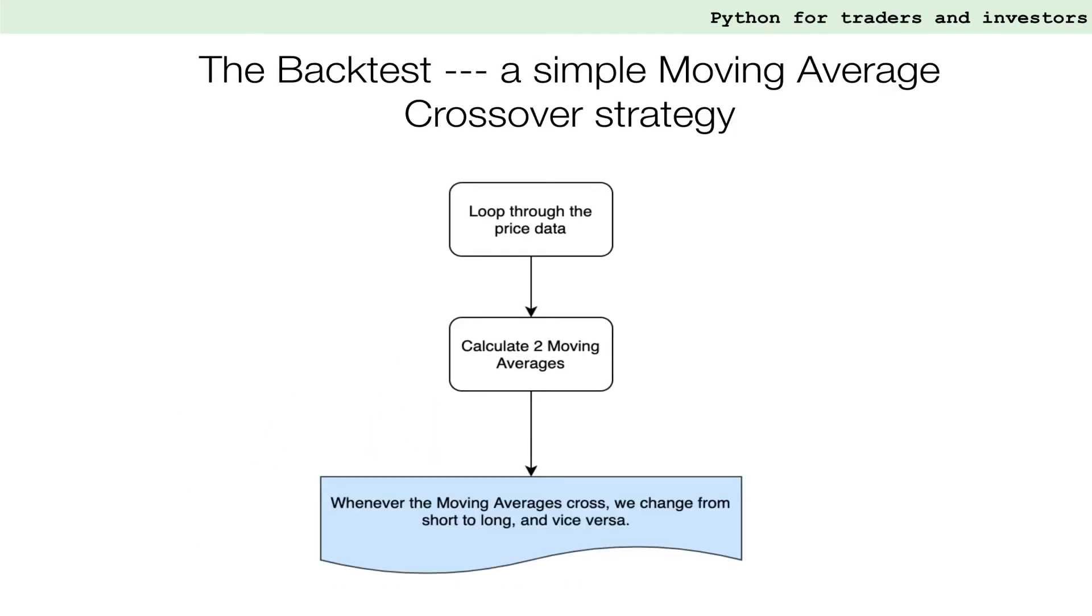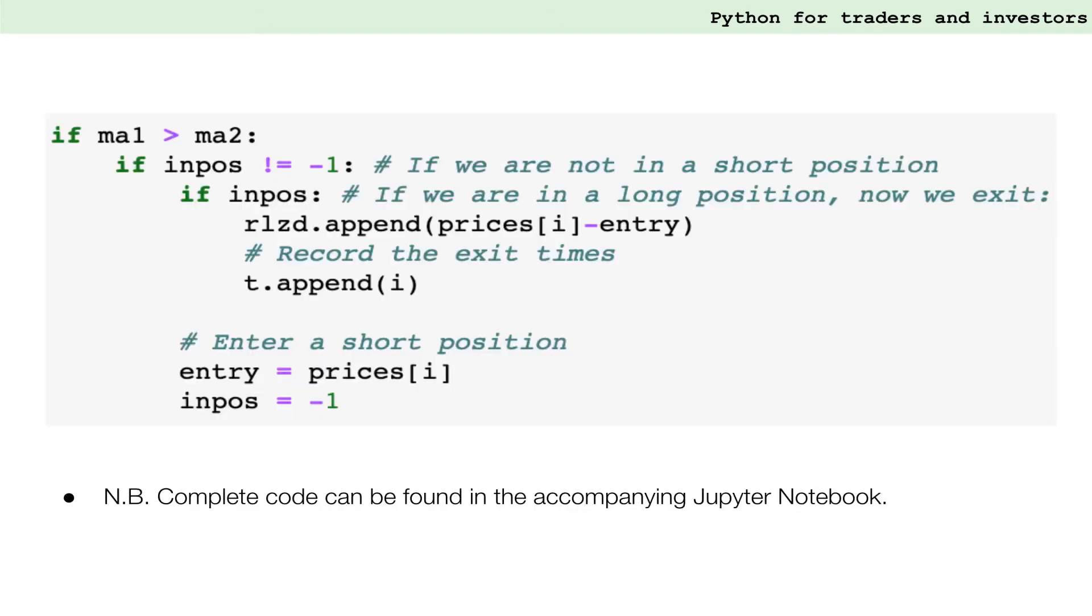Next, we create a backtest. In this backtest, we loop through our price data, calculate two moving averages and whenever the two moving averages cross, we change from short to long and vice versa. This part of the code shows a switch from a long to a short entry.